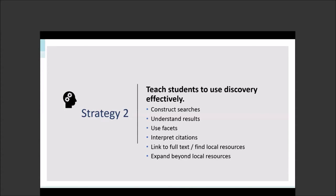You can teach them about facets and how to refine their searches. Research shows that students do not automatically use facets, but they're very effective at using them once they realize what they're there for — it's not something they immediately start using when they go into the results list. You can also teach them how to formulate queries and combine keywords, understand results lists, how to interpret citations, and how to request resources from the library, all from the results list.